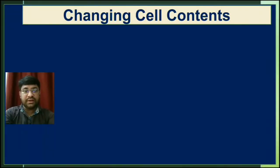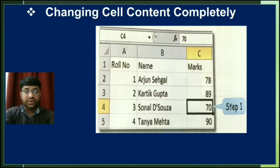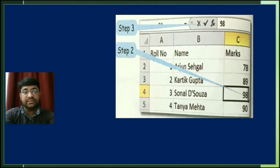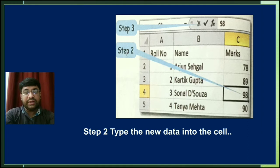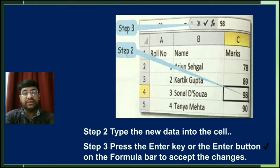Now we will learn how to change cell content. You can change cell content completely or partially. To change cell content completely: first, select the cell whose content has to be changed — for example, cell C4 which contains the value 70. Second, type the new data into the cell, such as 98. Third, press the Enter key or the Enter button on the formula bar to accept the changes.